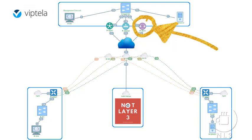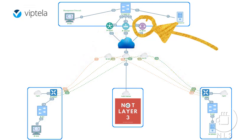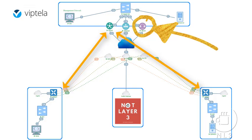The vBond orchestrator orchestrates the initial control connection between vSmart controllers and vEdge routers. It creates DTLS tunnels to the vSmart controllers and vEdge routers to authenticate each vEdge or cEdge — which is a Cisco edge — that is requesting control plane connectivity on the SD-WAN. This ensures only the devices you authorize are allowed on your network. The DTLS connections with vSmart controllers are permanent, so the vBond controller can inform the vSmart controllers as vEdges or cEdge routers join the network.